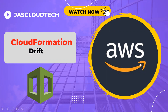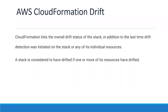What is Drift? How to use it? How we can track our CloudFormation template changes? CloudFormation lists the overall drift status of the stack. We can track when the last drift detection was initiated on the stack or any individual resources. Within the stack, if it has drifted one or more times, or whatever changes have happened, whether they are being accepted or not — we can track those things down.